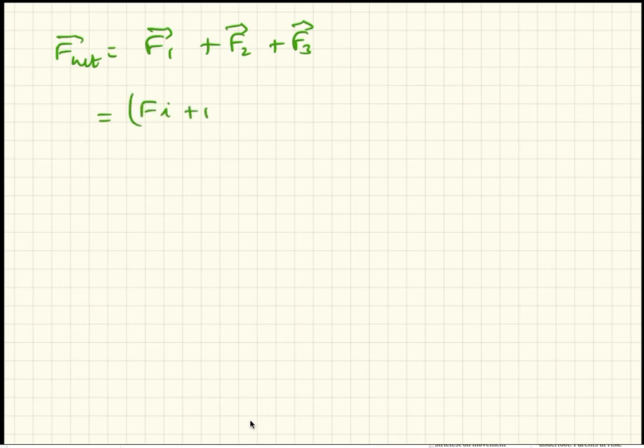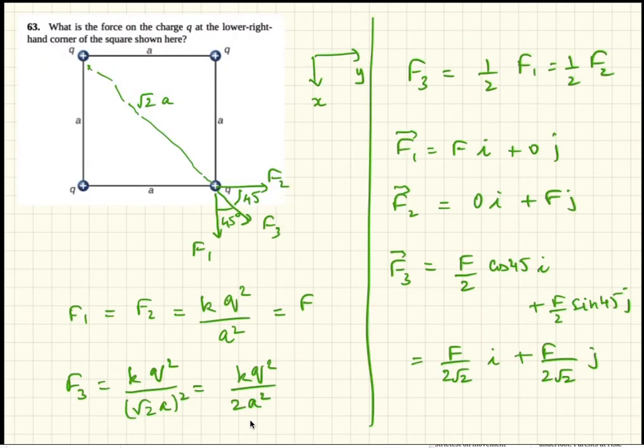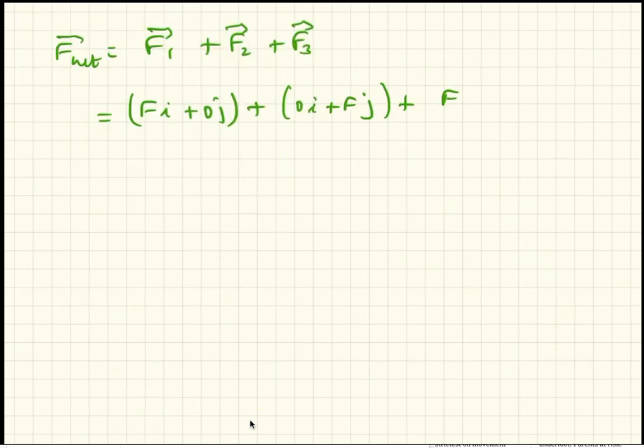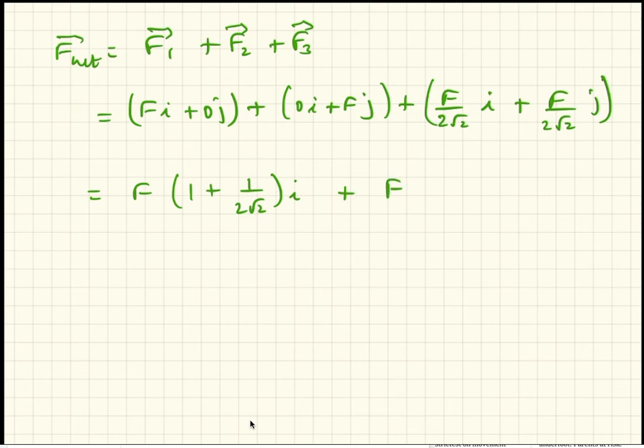F i plus 0 j plus 0 i plus F j plus F over 2 root 2 i plus F over 2 root 2 j. And that's equal to F times 1 plus 1 over 2 root 2 i plus F times 1 plus 1 over 2 root 2 j.